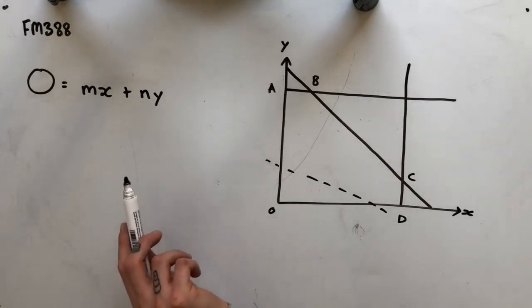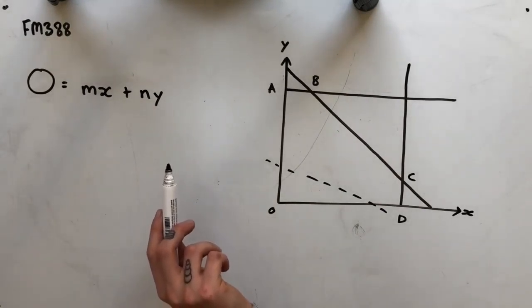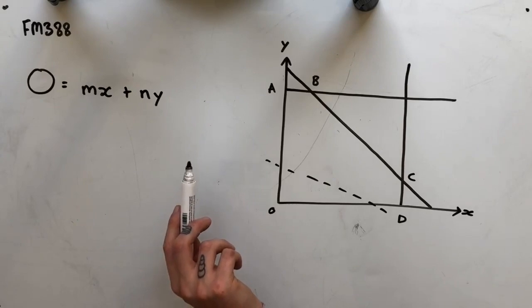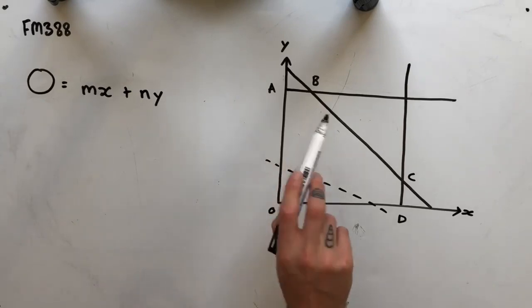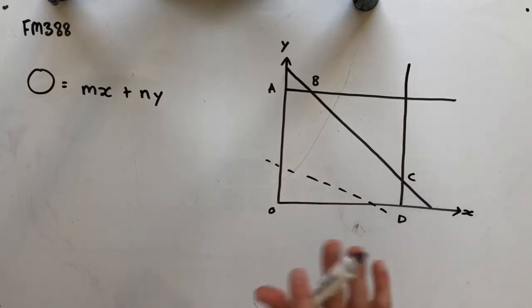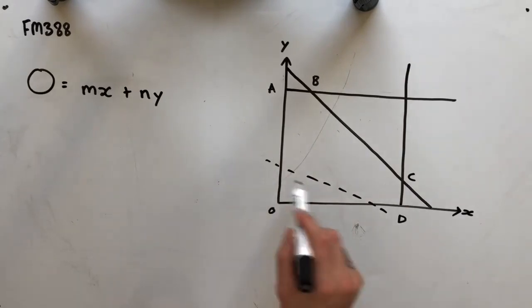The maximum value of the objective function can be determined by calculating its value at either point A, B, C or D, or we're unable to determine it from this graph.